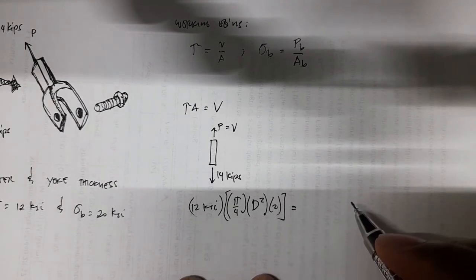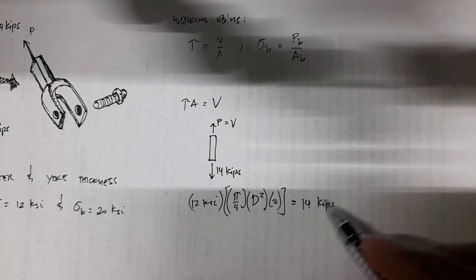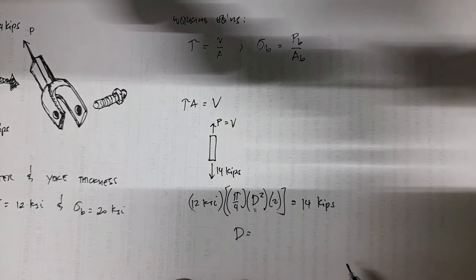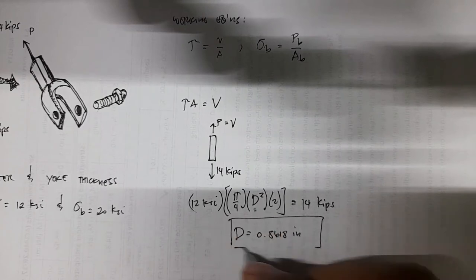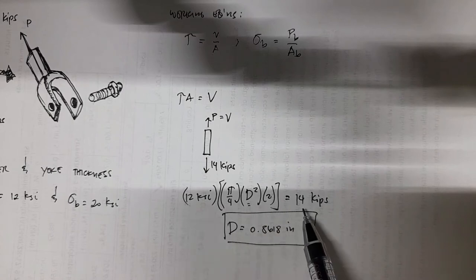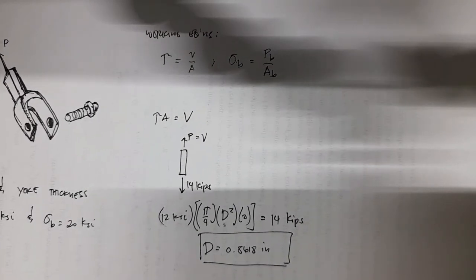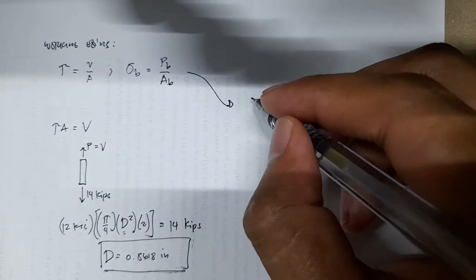Setting up the equation: 12 ksi times (pi/4 times d² times 2) equals 14 kips. The kip units cancel and we only have inches as the unknown. Solving for d gives 0.8618 inches. You can evaluate this by computing 14 divided by 12, then divided by 2, divided by pi/4, then taking the square root to arrive at this answer.